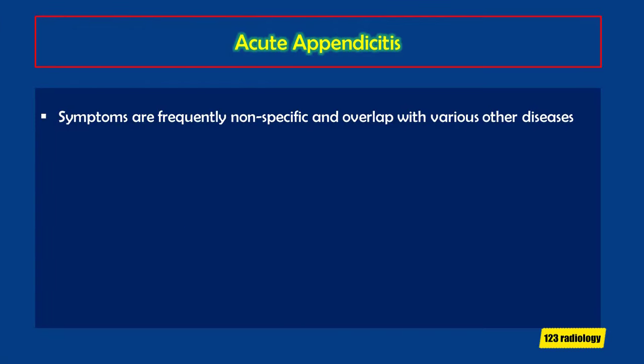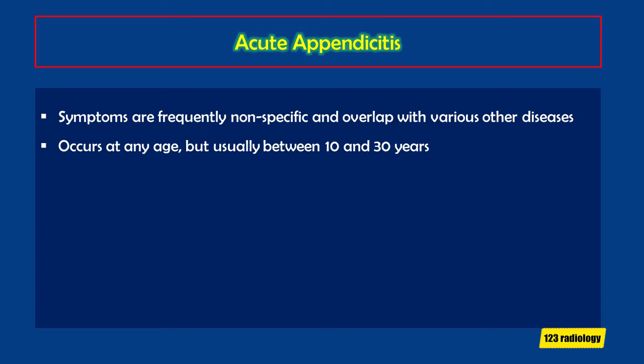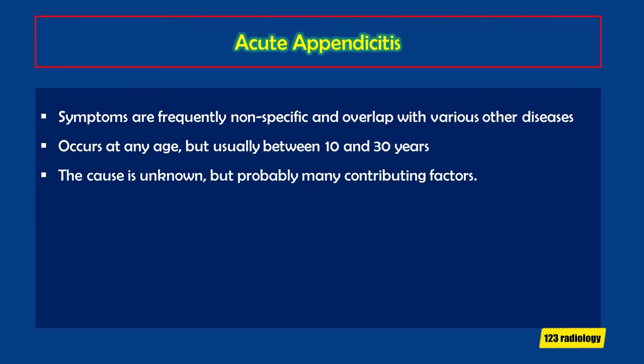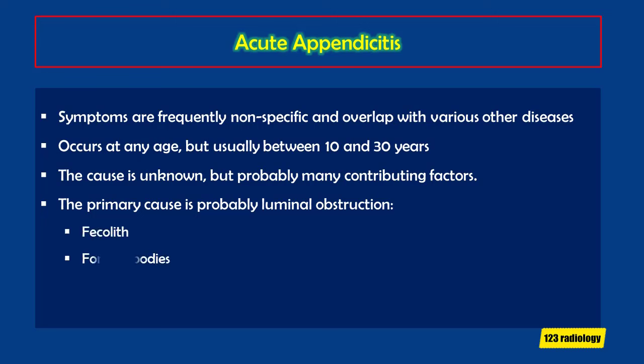The symptoms of acute appendicitis are frequently nonspecific and overlap with various other diseases. Acute appendicitis occurs at any age, but usually between 10 and 30 years. The cause is unknown, but there are probably many contributing factors. The primary cause is probably luminal obstruction, which may result from fecalith, foreign bodies, parasites, and primary neoplasms or metastasis.